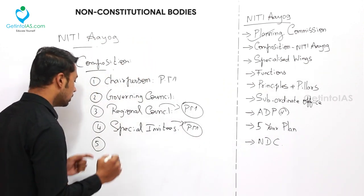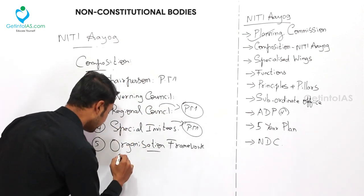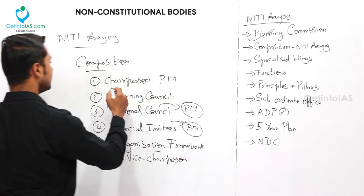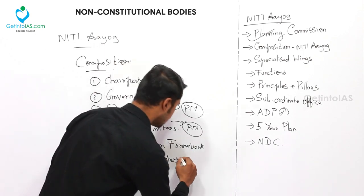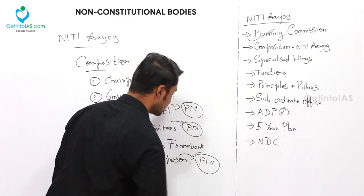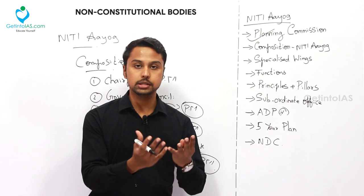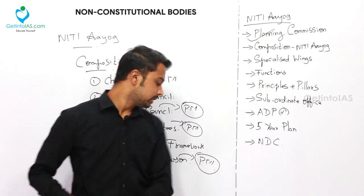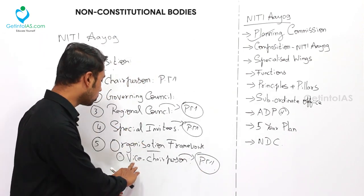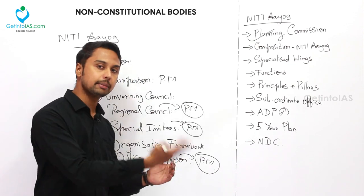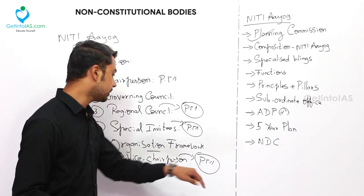Fifth is the Full-Time Organizational Framework. Under this, the first is the Vice Chairperson, appointed by the Prime Minister. The Vice Chairperson enjoys the rank of a Union Cabinet Minister — the same salary, allowances, and conditions as a Union Cabinet Minister apply to the Vice Chairperson of NITI Aayog.